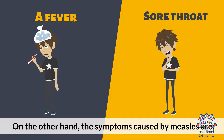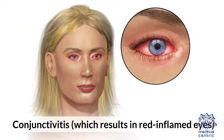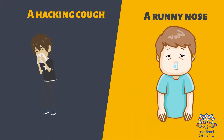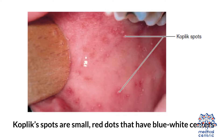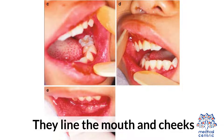On the other hand, symptoms caused by measles are a rash that initially shows up around the hairline or the forehead and then spreads downwards, conjunctivitis which results in red inflamed eyes, a hacking cough, a runny nose, and Koplik spots — small red dots that have blue-white centers that line the mouth and cheeks.